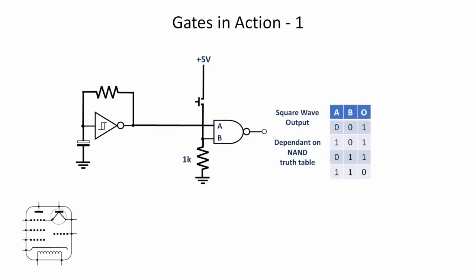So our square wave output then from the output of the NAND gate is dependent on the NAND truth table. If you look there, in pretty much all three of the cases, whilst the input B is low - in other words, the switch isn't pressed - the output's going to remain high, so we shouldn't see the pulse waveform unless I take input B high.